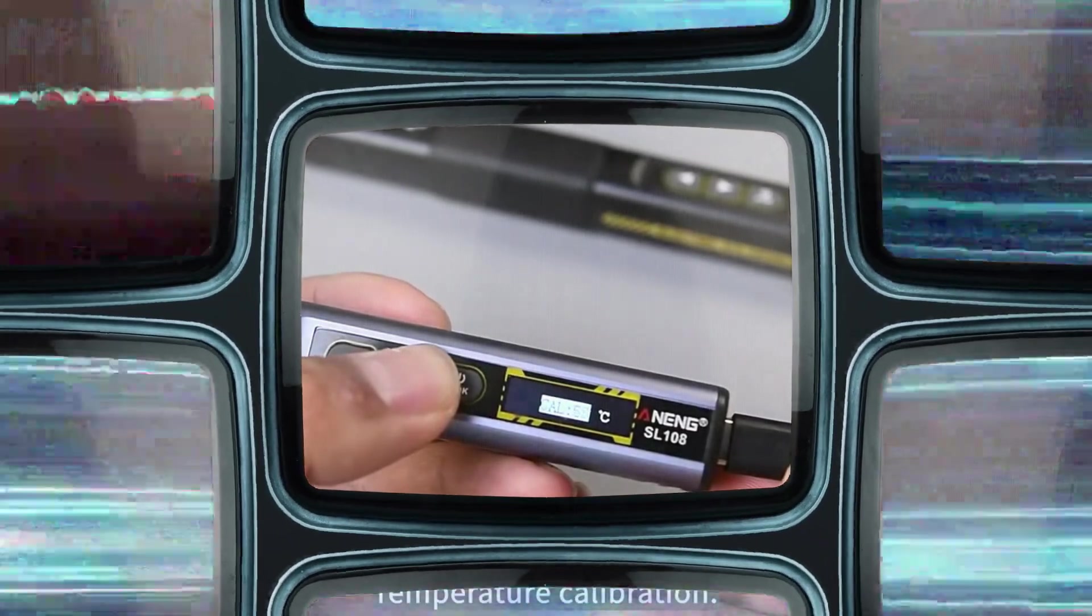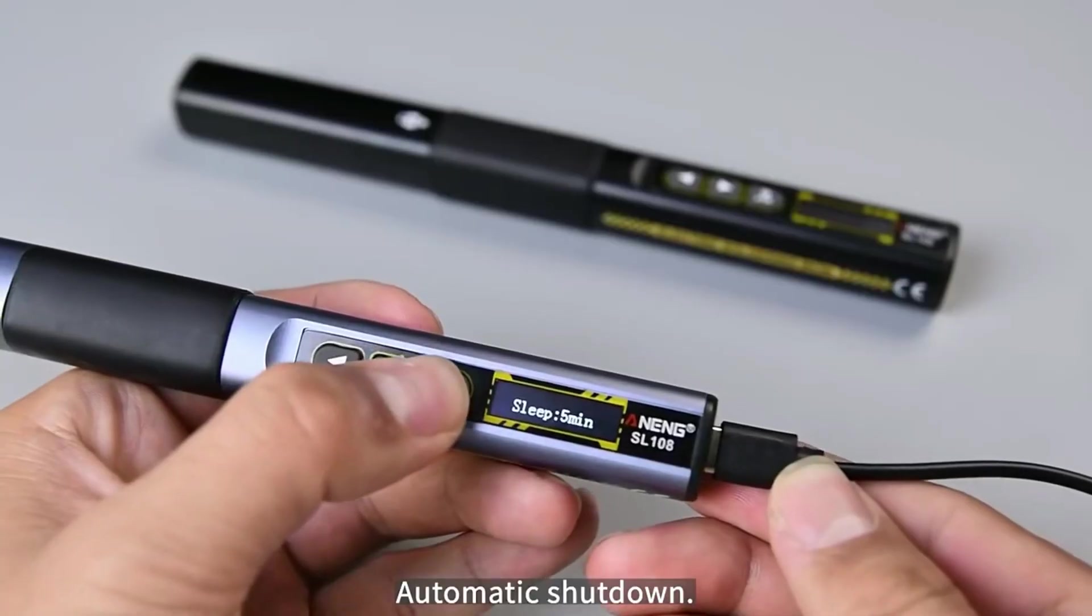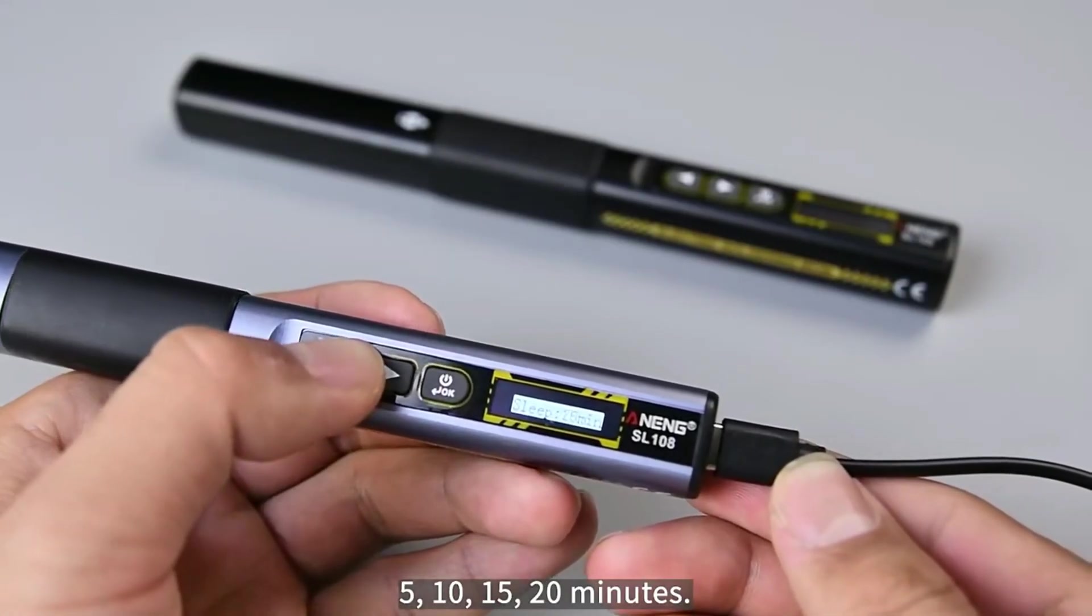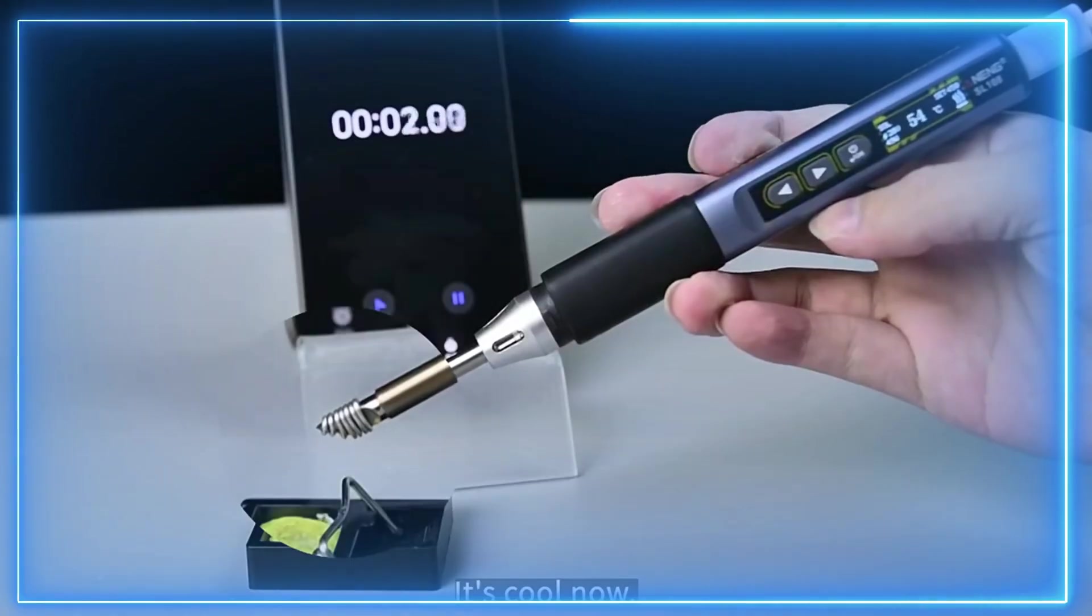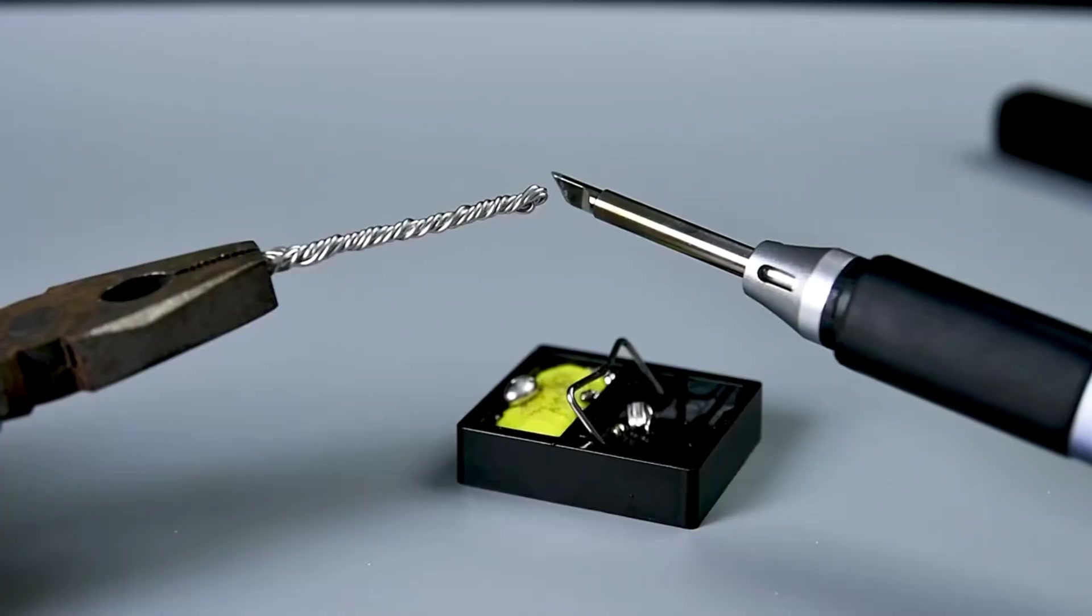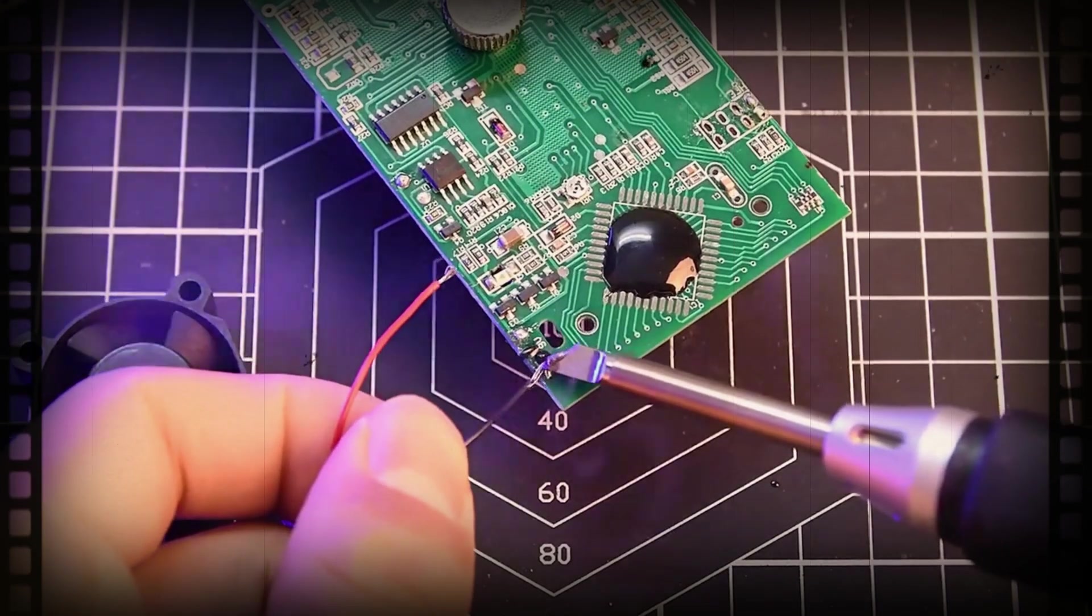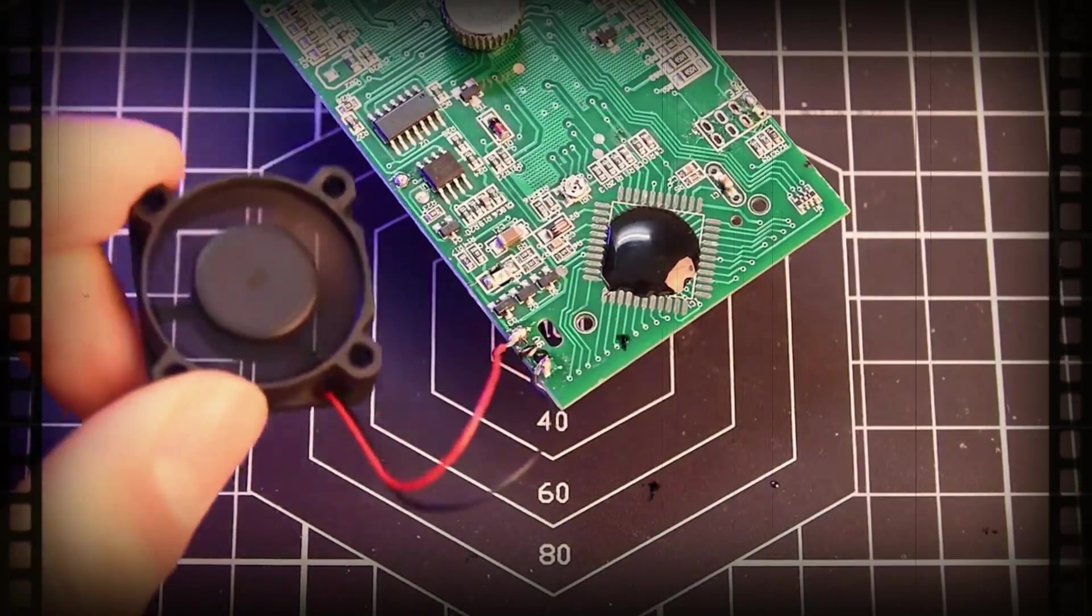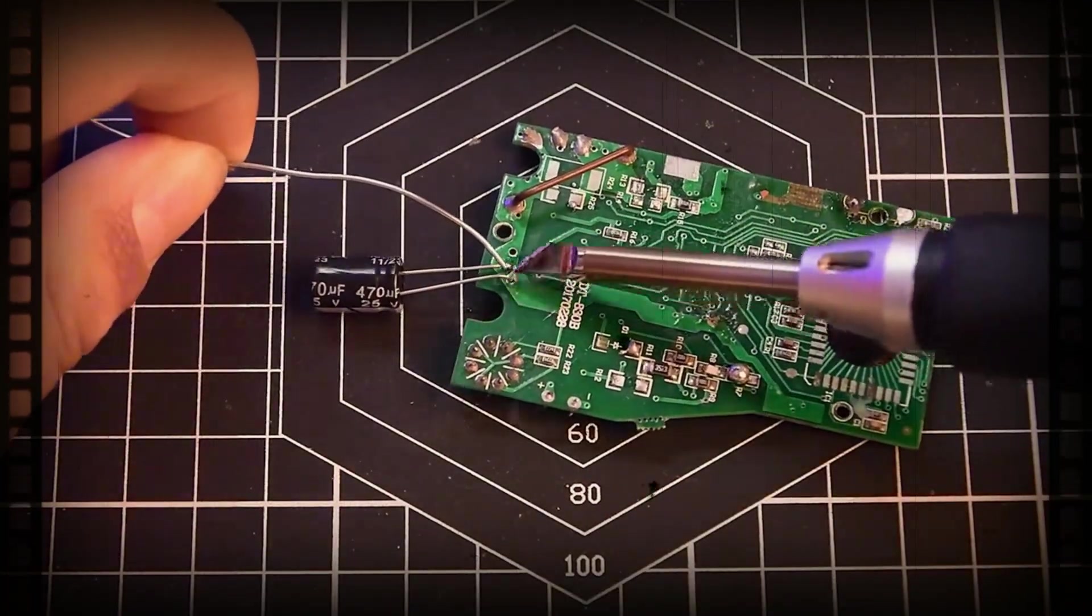It delivers adjustable temperature control, which ranges from 180 degrees Celsius to 500 degrees Celsius, 356 degrees Fahrenheit to 932 degrees Fahrenheit, and the clear LCD screen makes it easy to monitor the temperature in real time. This is especially handy for delicate electronic work where precise heat control can prevent damage to components. The temperature control buttons are responsive, and the digital readout is accurate, which gives you confidence when switching between tasks that require different heat settings.